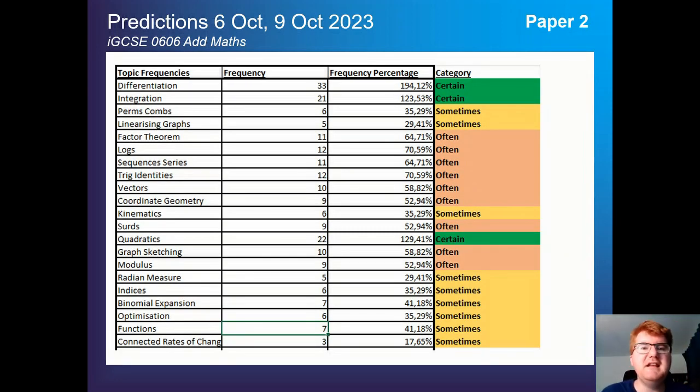You can see the percentages here. It's really between these certain topics. You can see these three topics are the most important. Then with lots of often topics appearing between 50 and 70%, making sure you know those as well will put you in good stead. One thing I'd like to mention here is your optimization at 35%. This almost always comes up at the end of the paper. So again, aiming for those top grades, don't forget how to do your optimization work as well.